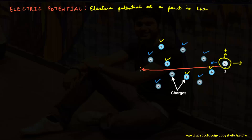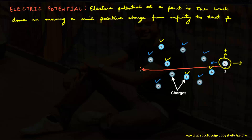If point 2 is at infinity and q is a unit positive charge, then the work done in moving the charge from point 2 to point 1 is the electric potential at point 1. Electric potential at a point is defined as the work done in moving a unit positive charge from infinity to that point. Infinity is the reference point, and the potential at infinity is assumed to be zero.